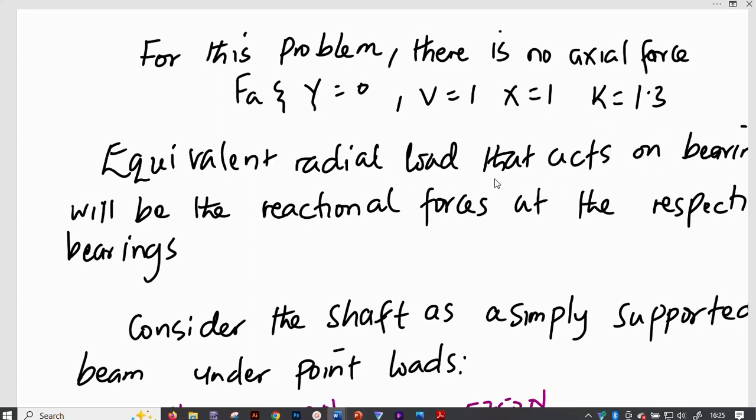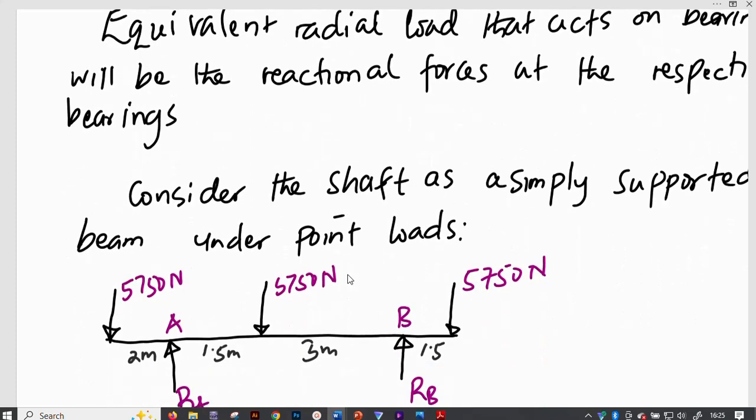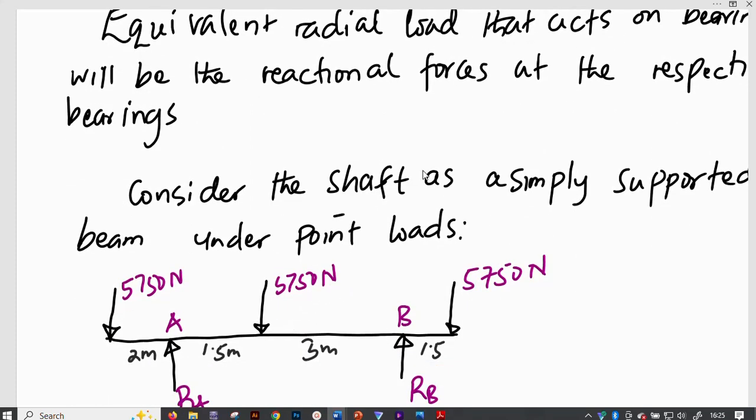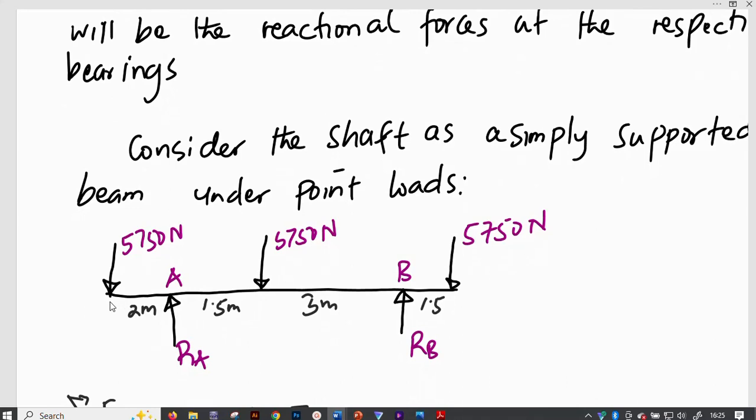The equivalent radial load, therefore, acts on a bearing in this particular problem. It will be the reaction of forces that act respectively at the bearings. So, if we consider this problem as a simply supported beam under point loads, we will see if this is the axis of the shaft being acted on by the pulley weights and the tensions on the belts, that is 5,750 Newtons at this point, at that point, and at that point, then we will experience the reactions that will be radial loads that will be felt at the bearings A and B.